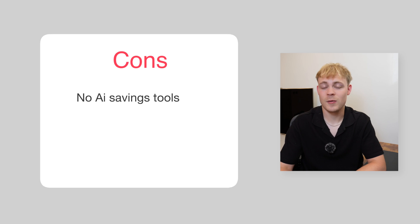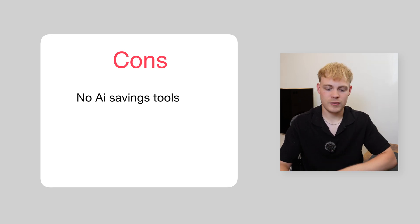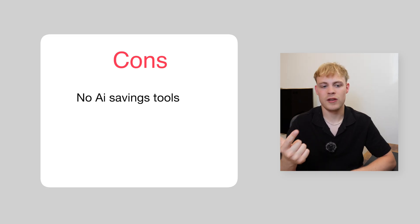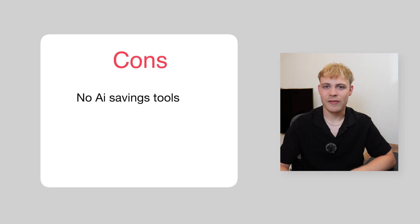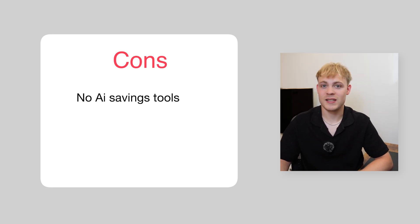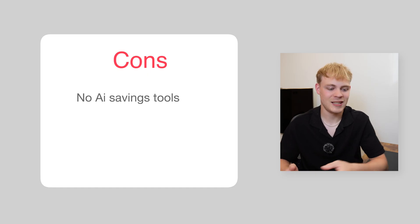The biggest con is that it doesn't have AI savings tools to help you actually save more money. With Emma or Plum you'd have roundups, a brain that automatically allocates money, and money moved on payday — Snoop doesn't have that. As a result, I can't see the justification in purchasing Snoop Plus at £11.99 a month. Founders, you need to find a different way to monetize your platform. If you want something to automatically save money, Emma, Plum, and YNAB are for you — but if you want to track your money and compare it month to month, download Snoop today.